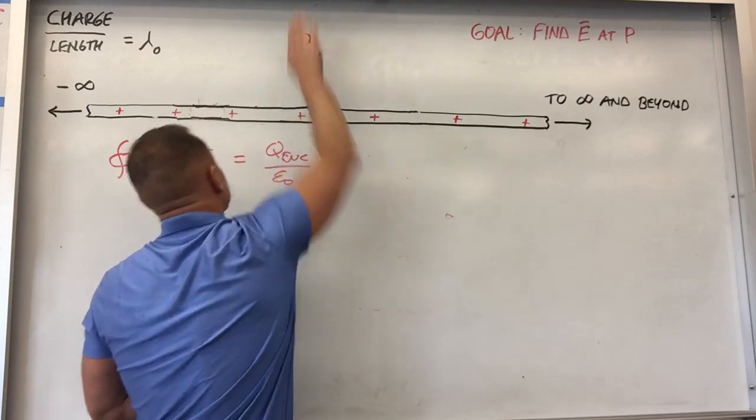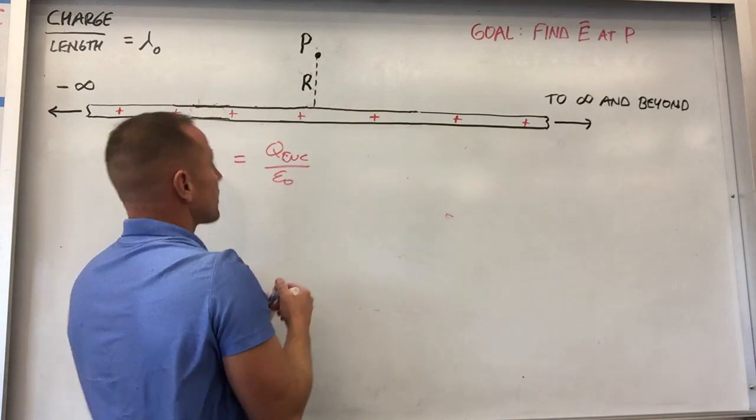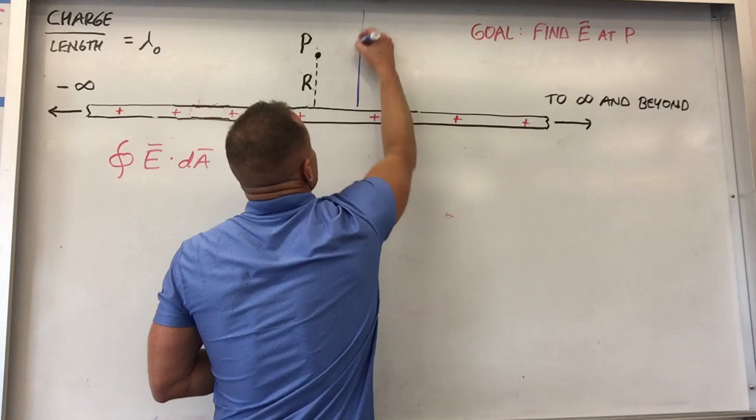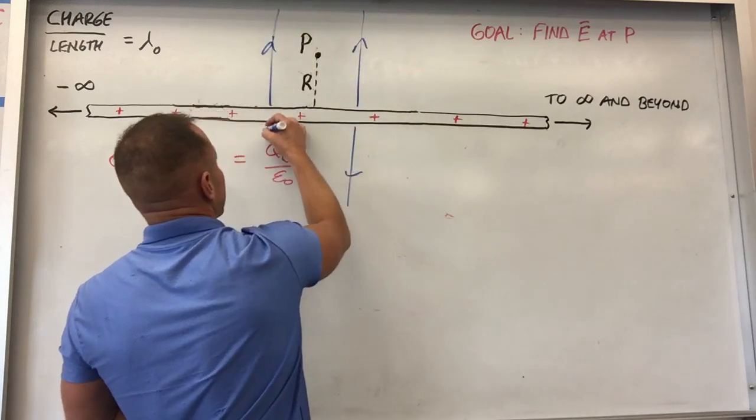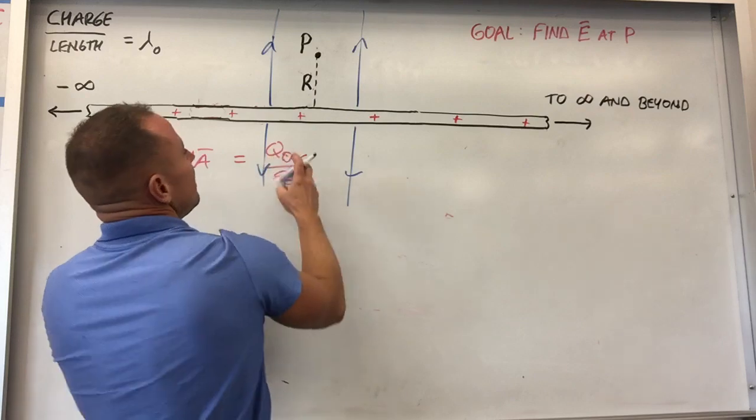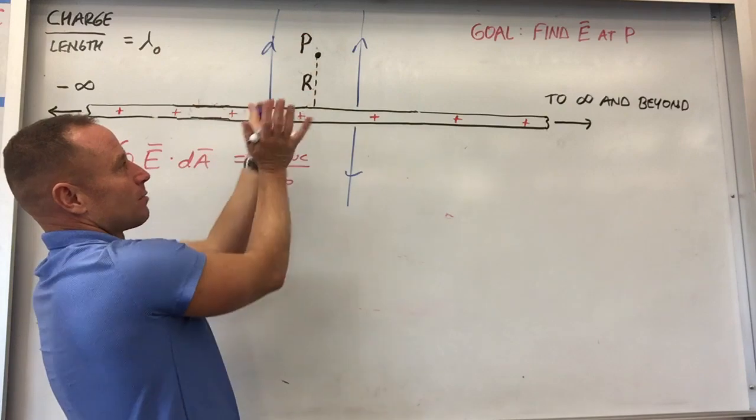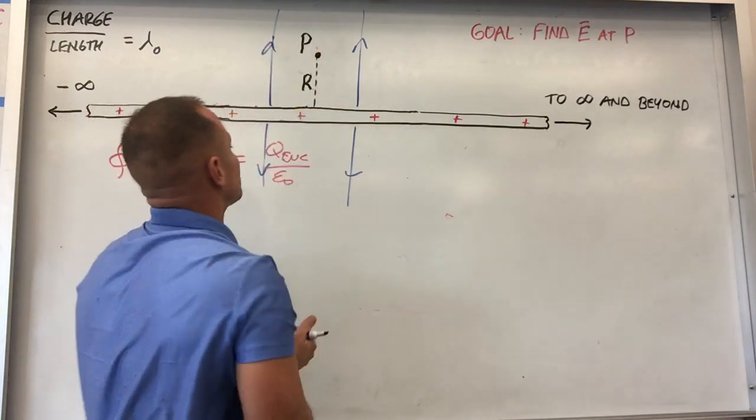So if you put a positive charge there, it's going to get pushed away. Well, no matter where you put a positive charge, it would get pushed away from the wire. So what's going to happen is the electric field around this thing is just going to point radially away in all directions. The field kind of points away like a bristle brush, like a cylindrical brush. The bristles on the brush, it points away.